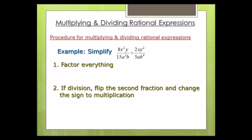The last topic in this chapter is multiplying and dividing rational expressions. This is really just glorified simplifying — it's just simplifying with an extra fraction. Instead of simplifying one fraction, you're simplifying two. The only thing you really have to remember is step number two: if there's a division sign, flip the second fraction and change the sign to multiplication. If the sign is already multiplication, you can skip step two.